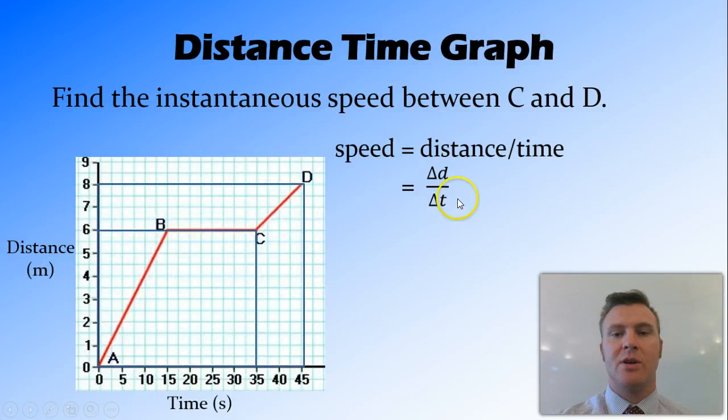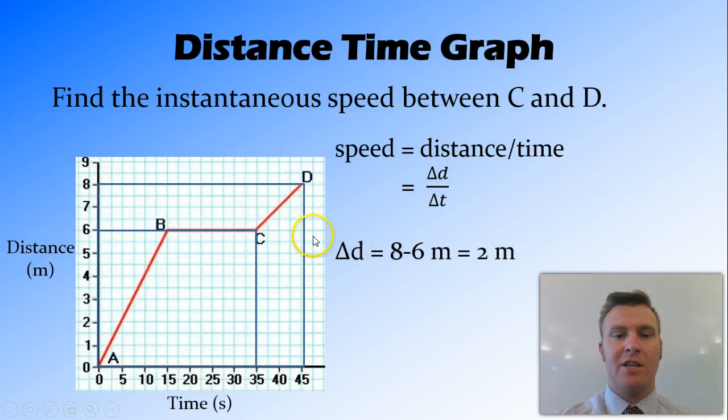So rather than the total distance, we're looking at the change in distance over the change in time. And don't get too confused about this. It's quite easy to work out the change. If we look at the final distance of 8 metres and the starting distance of 6 metres, 8 minus 6 is 2 metres. So the change in distance is 2 metres.